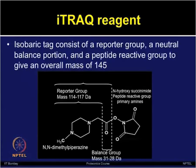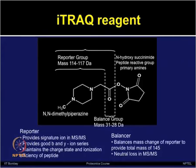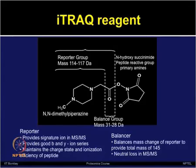This is the structure of the iTRAQ reagent, consisting of a reporter group, a neutral balance portion, and a peptide reactive group; the overall mass remains 145. The reporter group provides signature ions in MS/MS mode, gives good B and Y ion series, and maintains the charge state and ionization efficiency of peptides. The balancer group balances the mass change of the reporter to provide a total neutral loss mass of 145 in MS/MS mode.